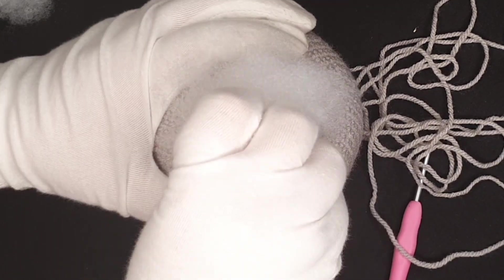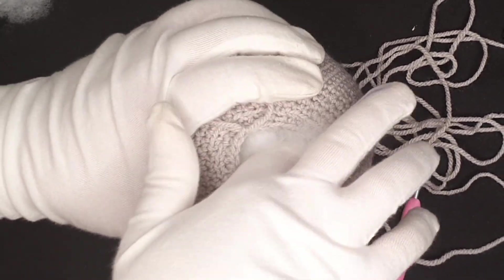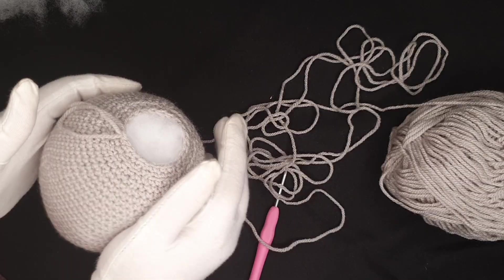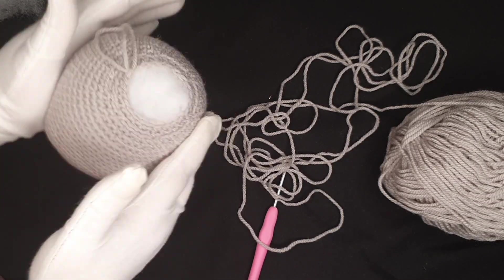As with all my amigurumi, they're being stuffed with 100% high loft polyester. Then once it's stuffed, we can give it a little wiggle to redistribute all the stuffing and make sure it's even.